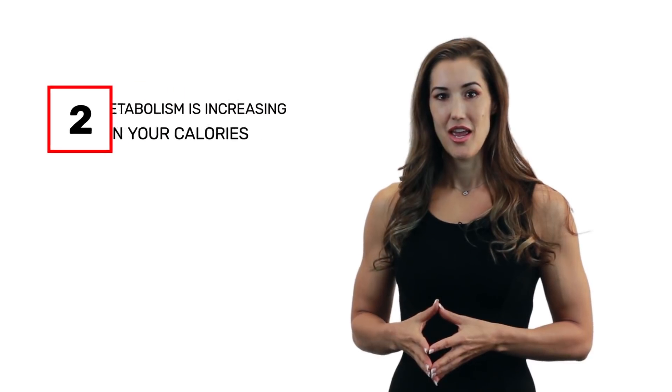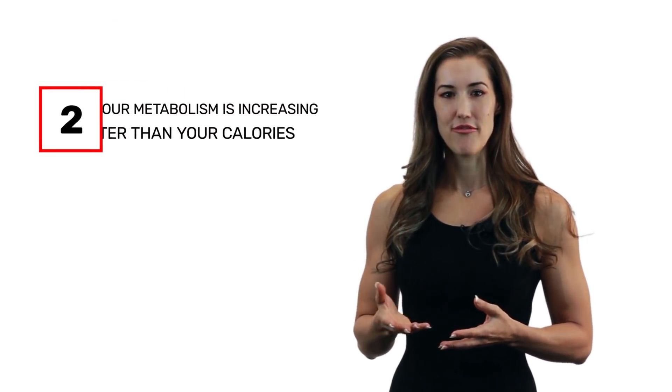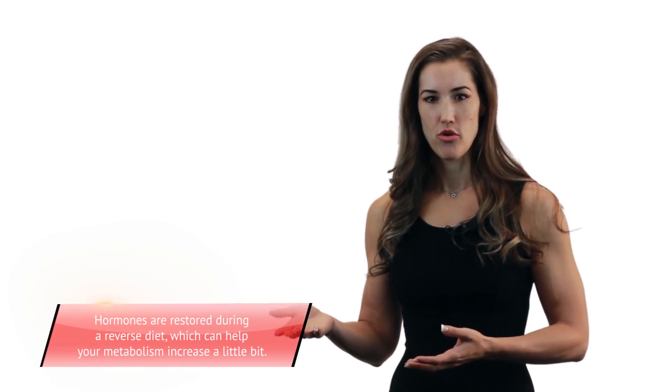The second reason that you might be losing weight on your reverse diet is that your metabolism may be increasing at a faster rate than your calories are increasing. And this can be especially true if you just came off a diet. So when you're on a diet, we know that often if that diet is super aggressive, thyroid hormones will drop, testosterone may drop, leptin may drop, and these things will all slow your metabolism down a little bit, causing you to adapt to those lower calories. Now when you increase calories through a reverse, you may restore some of those hormones, bringing metabolism back up to a more normal level.